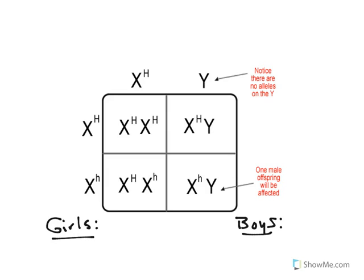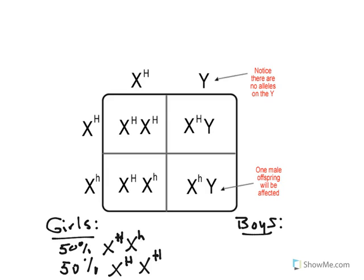For the girls, there's a 50% chance that they're going to be carriers and a 50% chance that they will be homozygous dominant. But phenotypically, they're all going to be normal because they all have the capital H. Whereas for the boys, there's a 50% chance that they will be normal and a 50% chance that they will have hemophilia. So look at the sexes separately when looking at sex-linked traits.